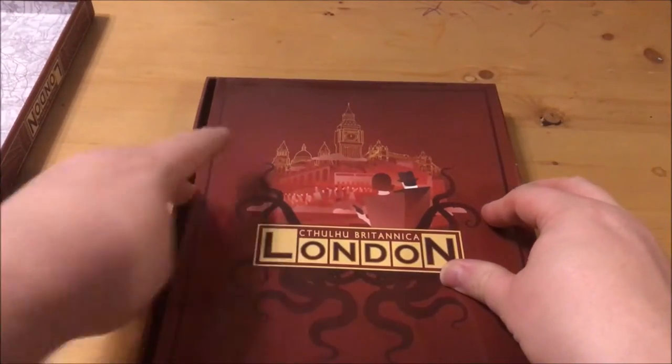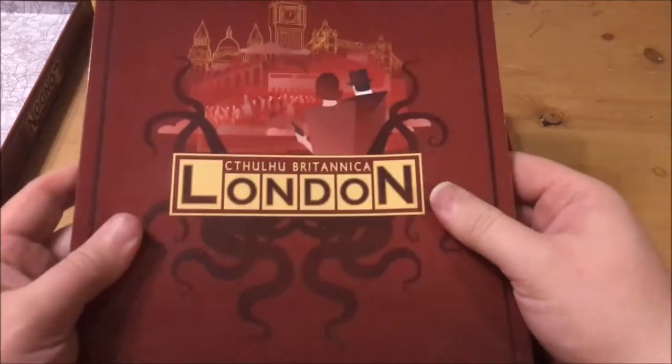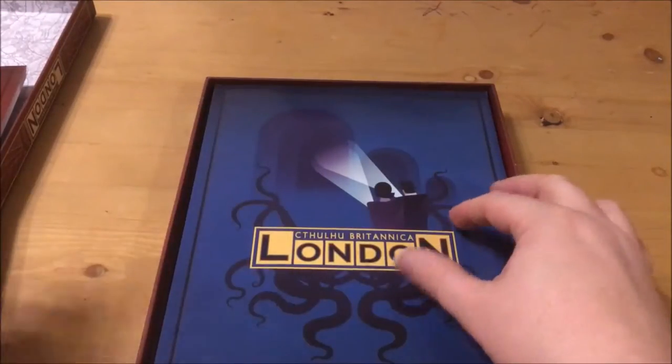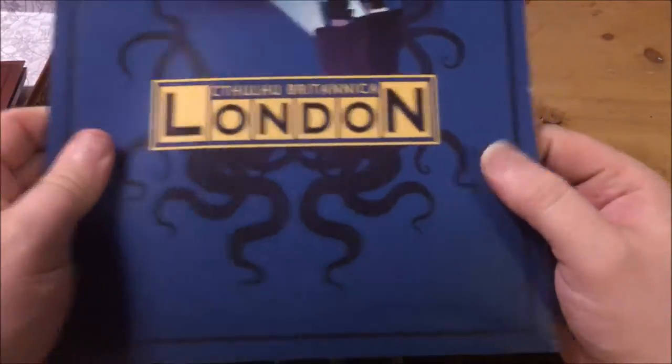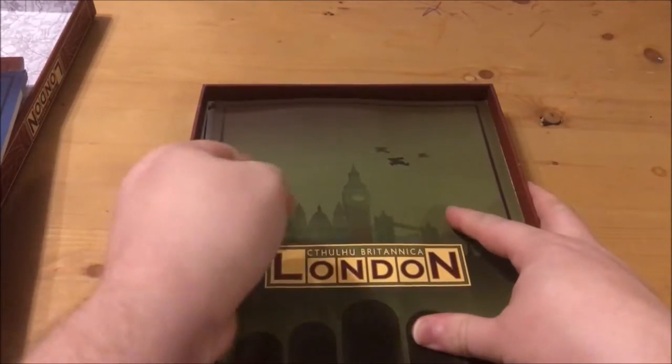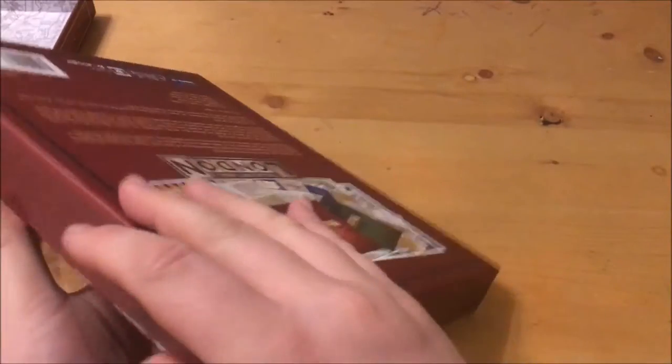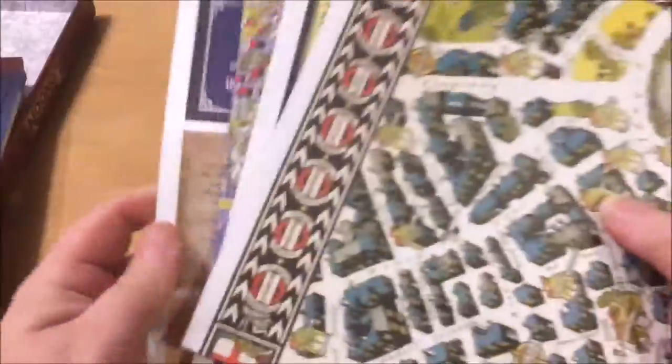It contains three glossy softback books: the 184 page Investigator's Guide to London, the 126 page Keeper's Guide to London, and the 96 page Adventures and Mythos London. Also as part of the set we have a few different maps and some grade A handouts for the adventures contained within.